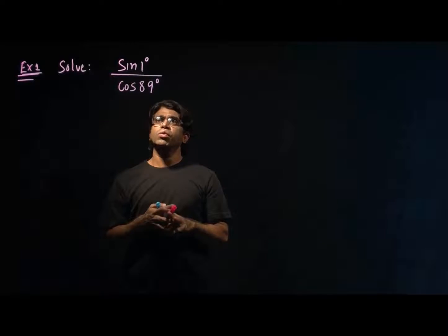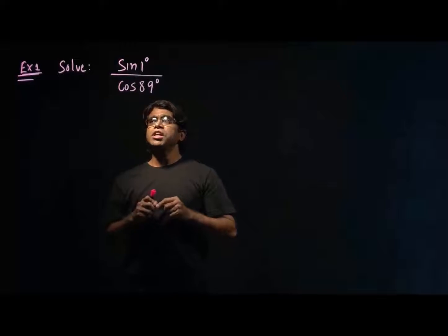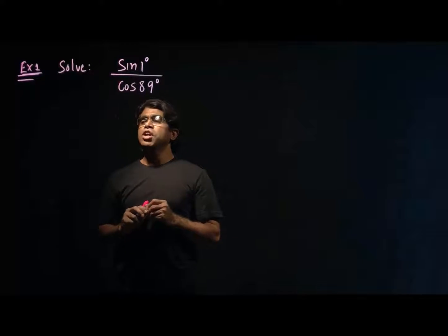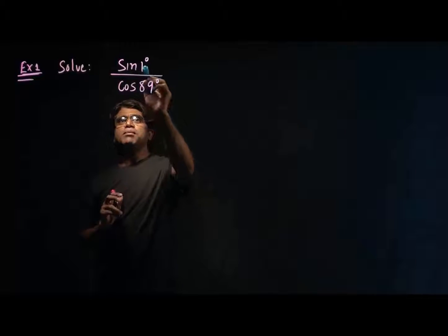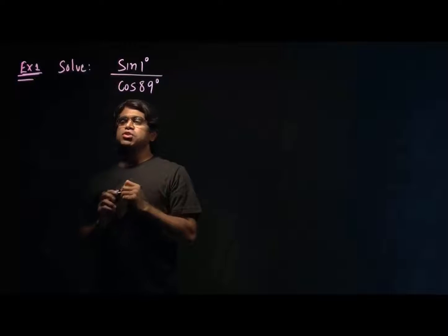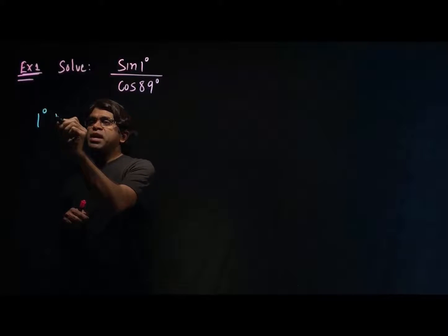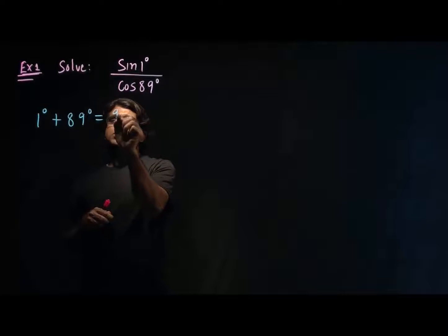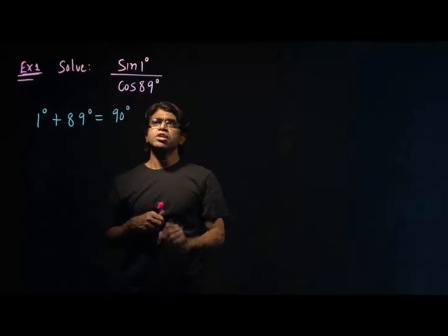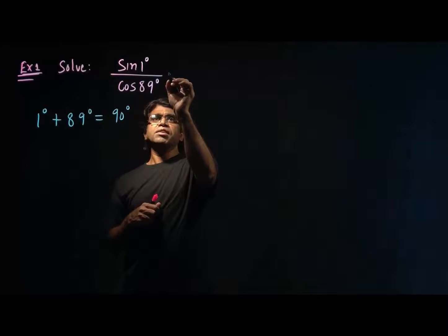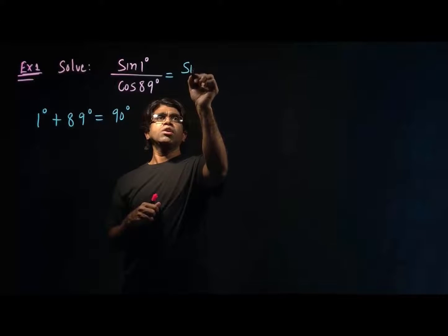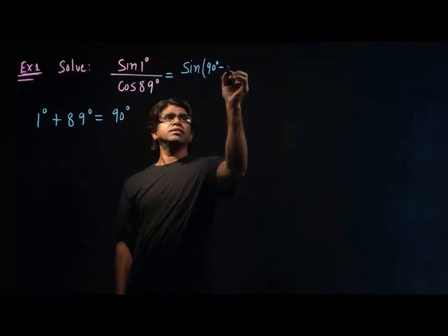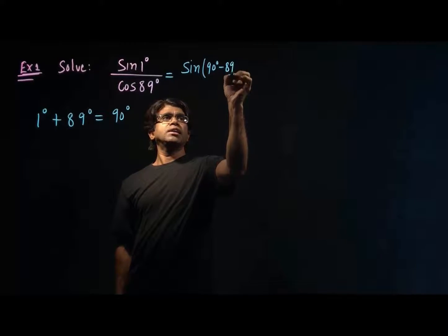Let's look at this question. As you can see, the question is sine one degree over cosine 89 degrees. What I need to do is find the complementary angle for one degree. We know that one degree plus 89 degrees equals 90 degrees. So I can write sine one degree as sine of 90 degrees minus 89 degrees.